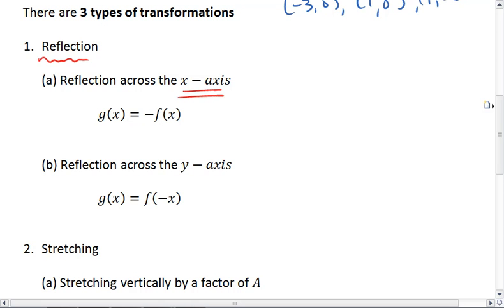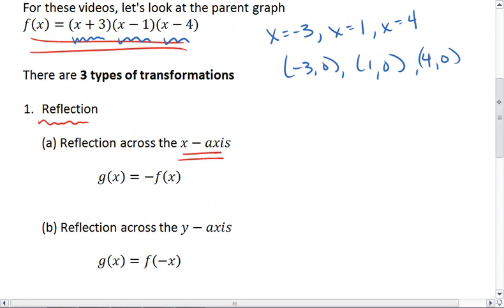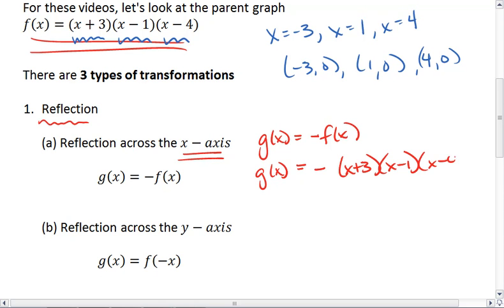So we make all of our positive outputs negative and all of our negative outputs positive. The way that this looks in an equation is that we put a negative in front of the entire function. So our new function G(x) = -(x + 3)(x - 1)(x - 4).